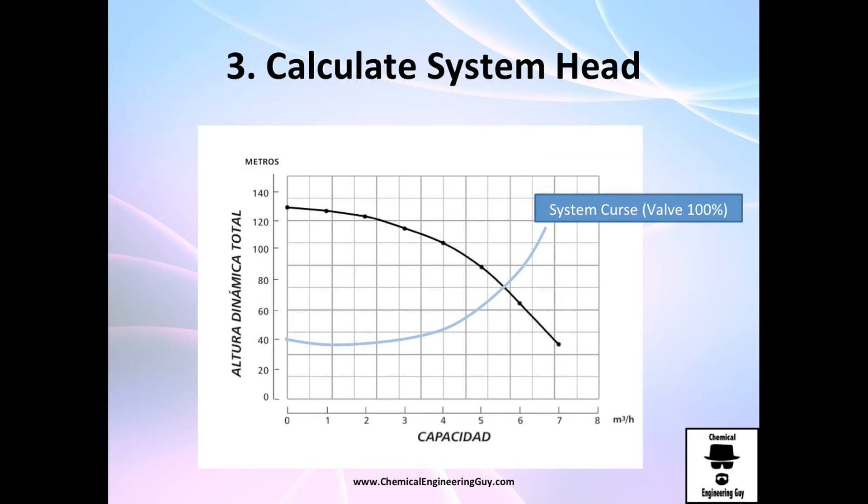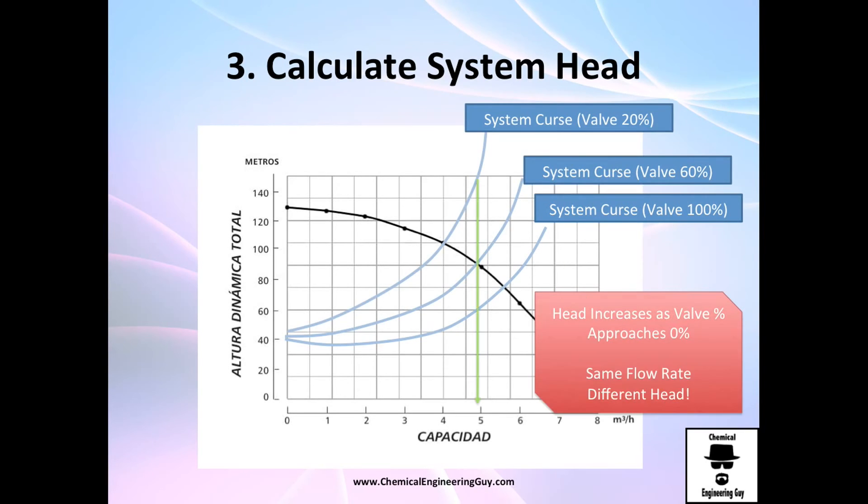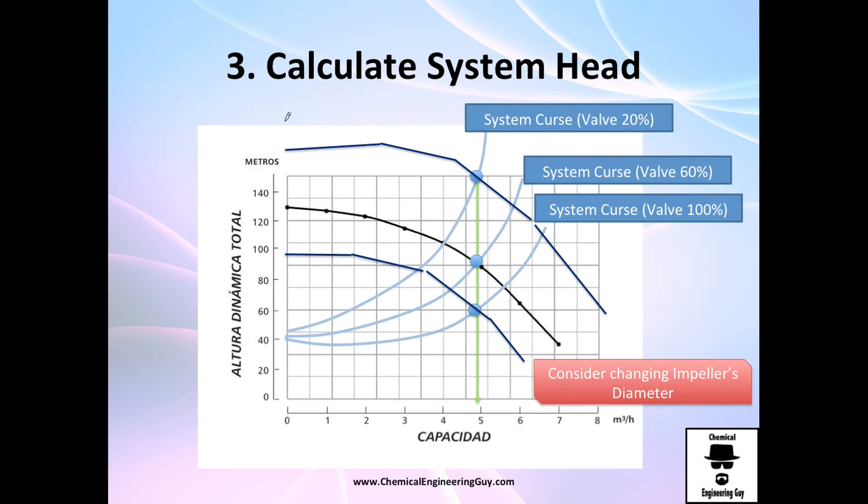And that was how we control the system head or system curve in order to force it for new pumps. For example, here we got this pump system, this pump system, and this pump system. Normally the pump curves you cannot change them - the only thing you can change are impeller sizes or velocities, which is not that recommended. The revolution per minute... the typical thing you will do is open and close valves.